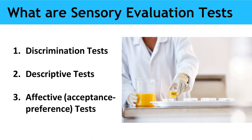Sensory tests may be divided into three groups on the basis of the type of information that they provide. The three types are discrimination, descriptive, and affective acceptance preference. Selection of the appropriate test should be based on clearly defined objectives for the project.